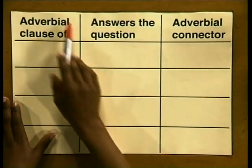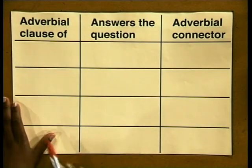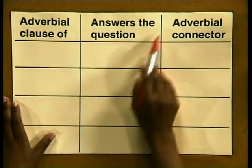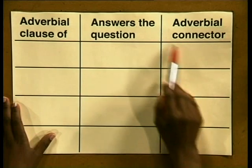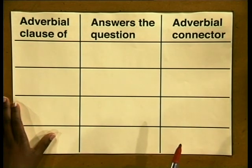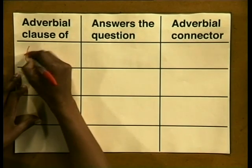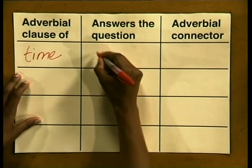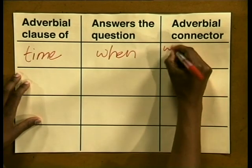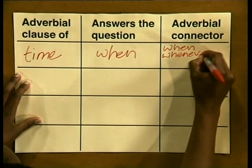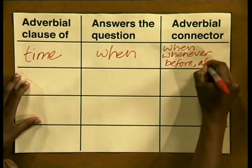Follow me and write down these three different headings: 'Adverbial clause of' — and we'll look at different types of adverbial clause. The next heading is 'answers the question,' because adverbial clauses answer particular questions. And lastly, 'adverbial connector,' which is the word by which adverbial clauses may be introduced. The first type of adverbial clause is known as an adverbial clause of time. This tells us when the main clause took place, and it can be introduced by the words: when, whenever, before, or after.